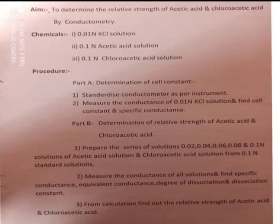From the calculations, find out the relative strength of acetic acid and chloroacetic acid. The same experiment was performed in MSU1 for acetic acid only. Now, you have to perform the experiment for chloroacetic acid and find out the relative strength of both acids.